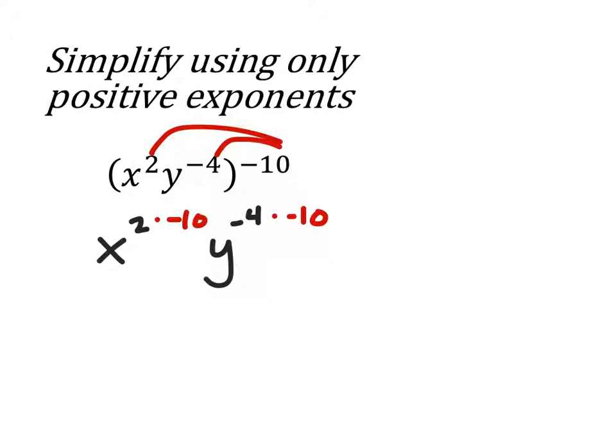Now I think some people call this the power of power rules, but since we have a product on the inside, we're raising the power of both the x and the y and multiplying those by negative 10.